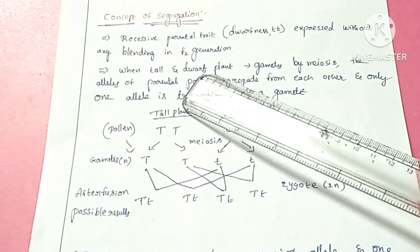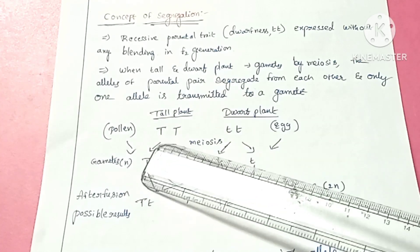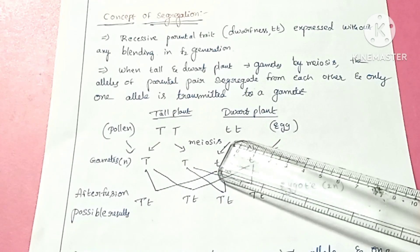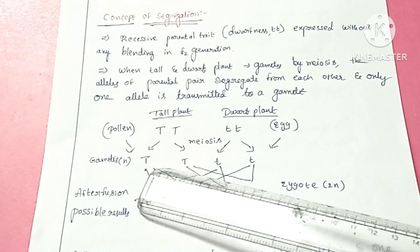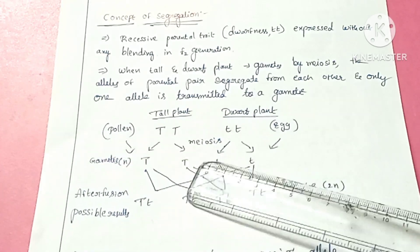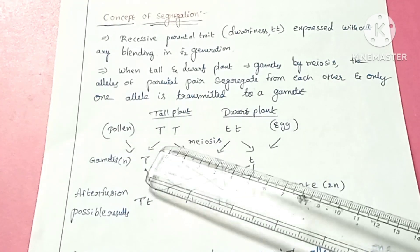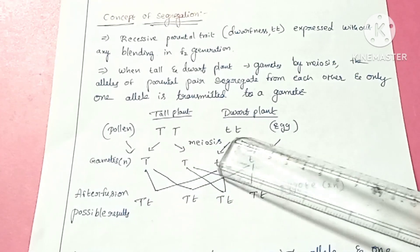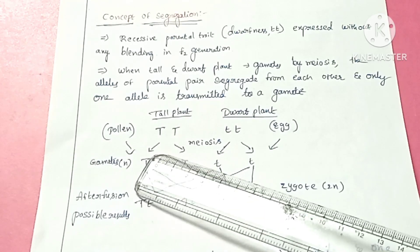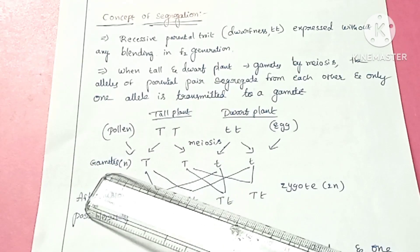We can also conclude that when tall plants and dwarf plants produce gametes — the tall plant contains capital D capital D, and the dwarf plant contains small d small d — these gametes are produced by the process of meiosis. The alleles of the parental pair segregate from each other, and only one allele is transmitted to the gamete.